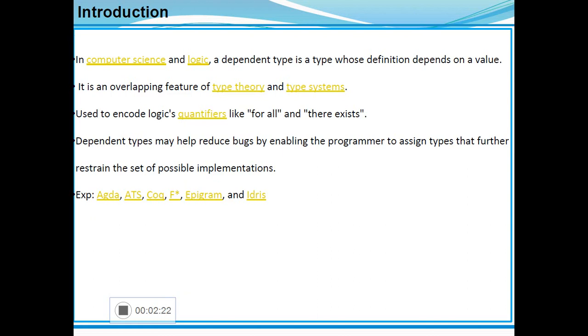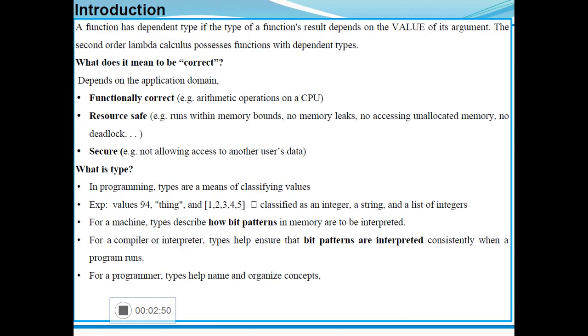In computer science and logic, a dependent type is a type whose definition depends on the value. It is an overlapping feature of type theory as well as a type system. It is used to encode quantifiers such as for all and there exists. Dependent types may help reduce bugs by enabling the programmer to assign types that further restrain the set of possible implementations. The languages AGDA, IDRIS, ATS and AGDA support this dependent type programming paradigm.